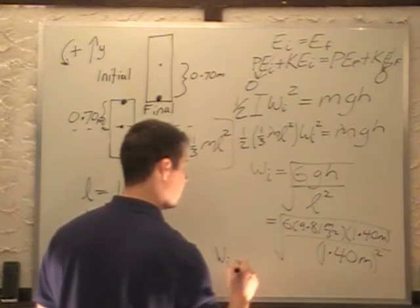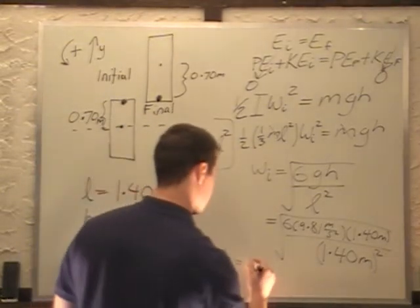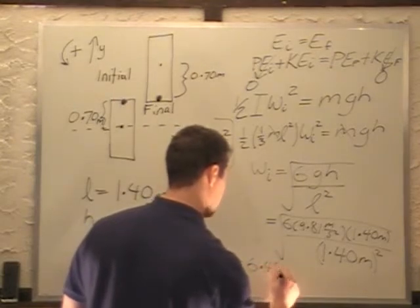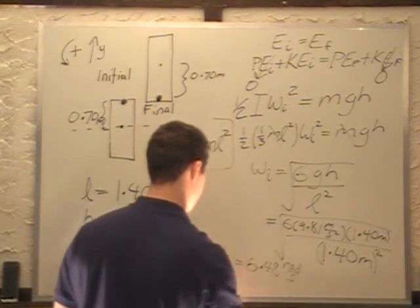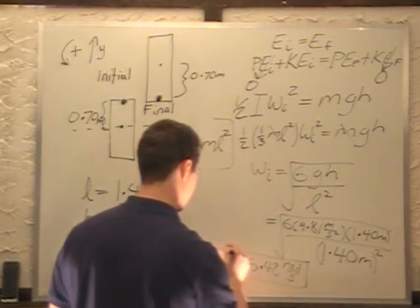I get an initial omega of 6.48 radians per second, and that is my final answer.